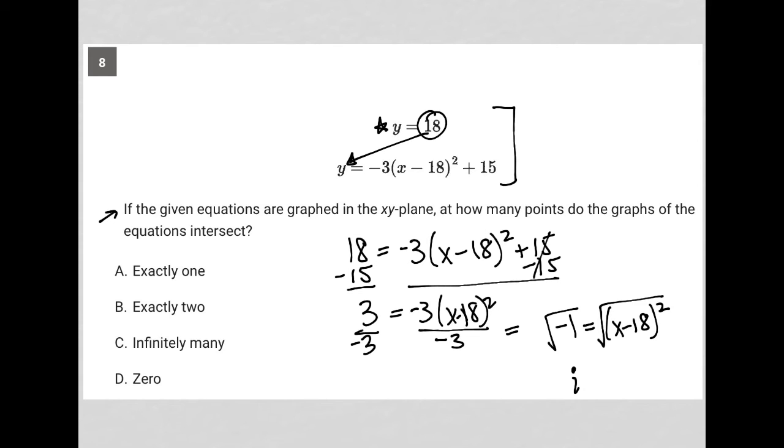And I'm going to say they intersect at zero points. The reason why that is is because I should get an x value that would represent where those lines intersect. I should get a real number for that x. But when I attempt to solve for x, I actually get an imaginary value. I get this i that comes out. I'd have i equals x minus 18, and therefore x is equal to i plus 18, which is not a real value. So that's why I'm choosing zero here. The answer to question 8 is D.